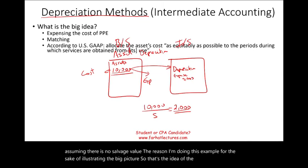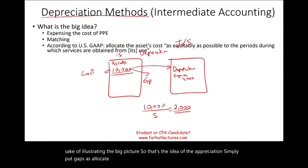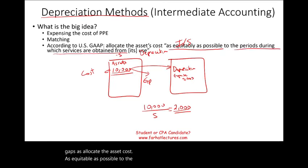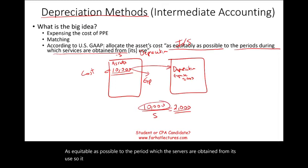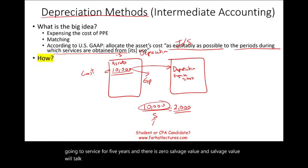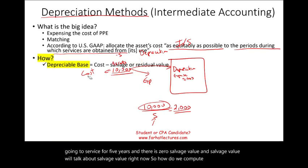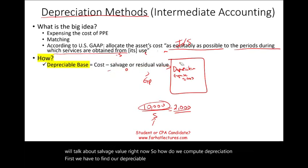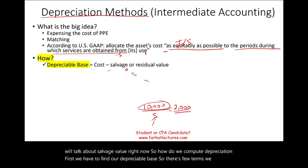Simply put, GAAP says: allocate the asset cost as equitably as possible to the period in which the services are obtained from its use. So we're assuming this machinery or vehicle will service for five years with zero salvage value. How do we compute depreciation? First, we have to find our depreciable base, so there are a few terms we need to be familiar with.